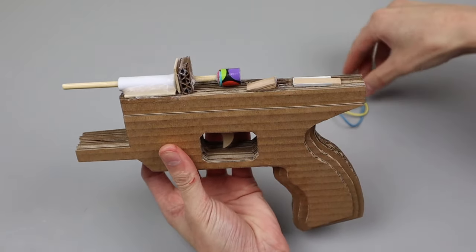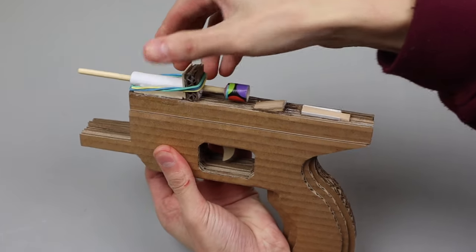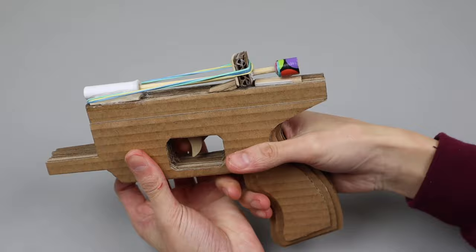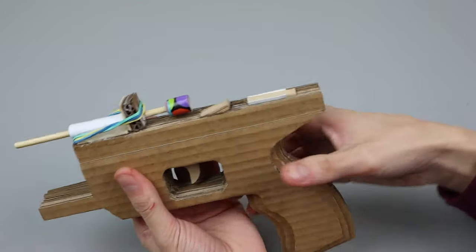Essentially what happens is you pull back this piece which gets caught on a lip, and when you pull the trigger it comes off the lip and propels forward. That is what's going to make contact with the bullet.